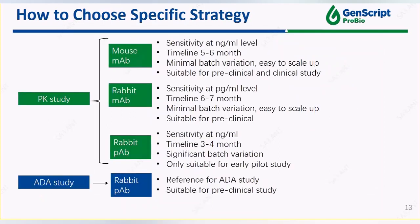With all these options, we recommend to choose a suitable strategy based on the final application. Mouse and rabbit monoclonal anti-ID are suitable for preclinical PK study, while rabbit polyclonal is only acceptable for early stage pilot PK study and ideal for ADA study. The detection sensitivity of rabbit monoclonal antibody is generally better than mouse MAB, but mouse version is typically enough for the purpose of detection since the dose of antibody drug is usually higher than small molecule drugs.